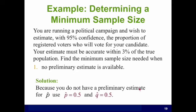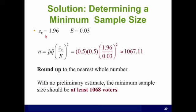Because you do not have a preliminary estimate use P hat one half and Q hat one half. For the 95% confidence level the critical point is 1.96. We should be familiar at this point with this value and the margin of error that we want is 3%.